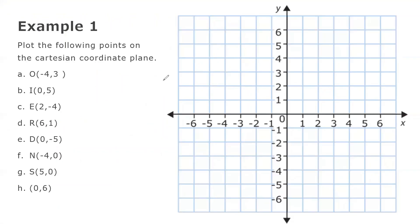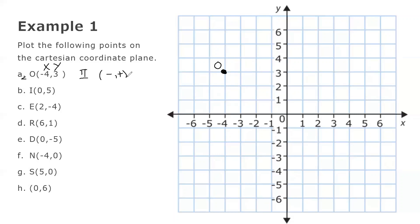Let's plot the following points on the Cartesian coordinate plane. Starting with point O, where x is negative 4 and y is positive 3. So we go to negative 4 on the x-axis and positive 3 on the y-axis. Point O is located in Quadrant 2, where the sign of x is negative and the sign of y is positive.